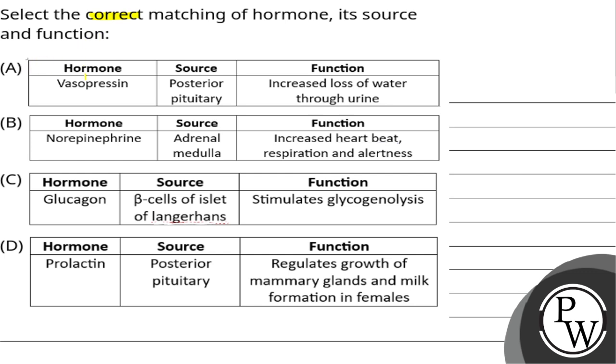In option A, hormone vasopressin, source posterior pituitary. Function: increase loss of water through urine.